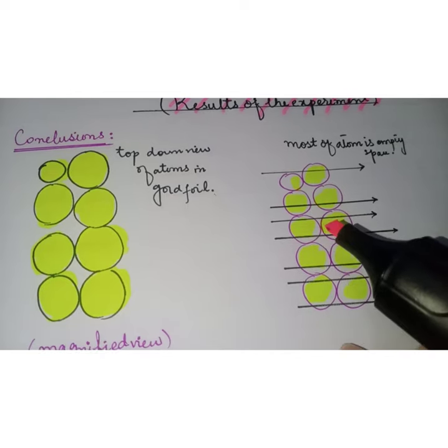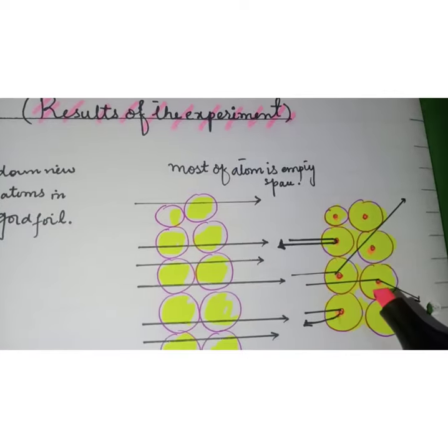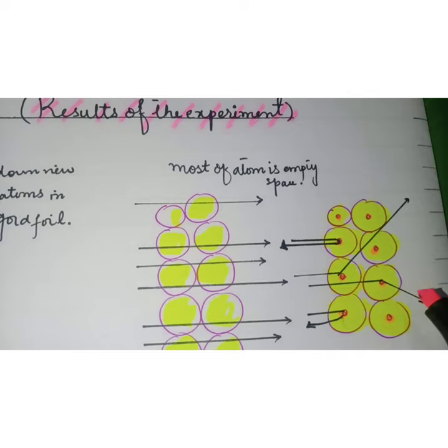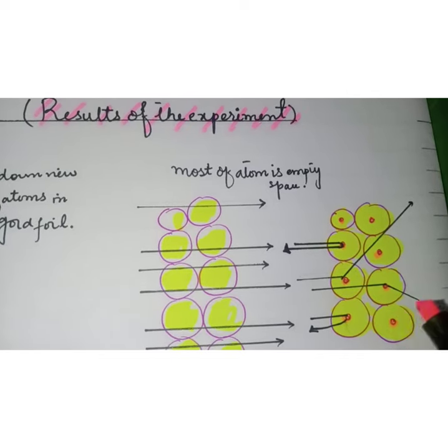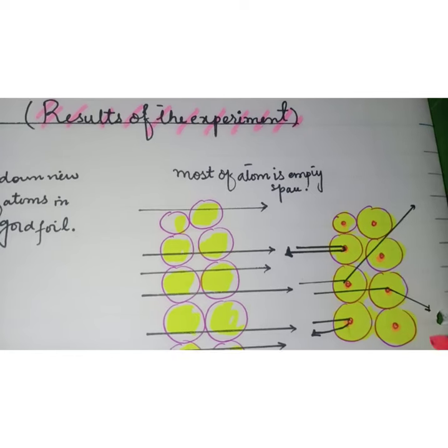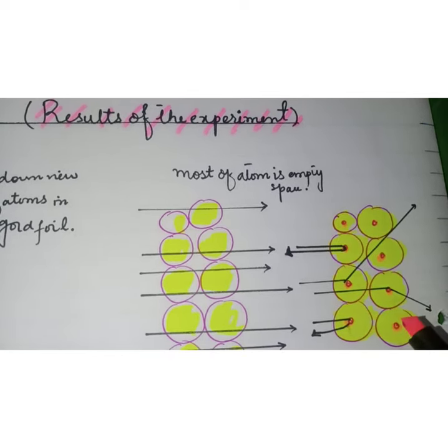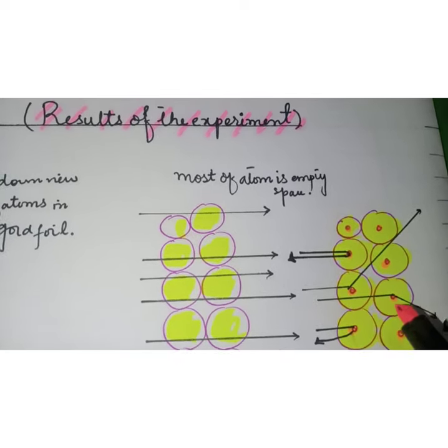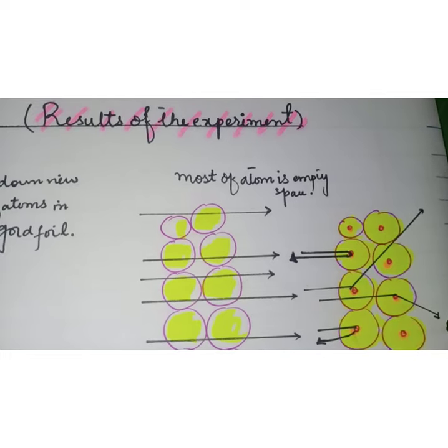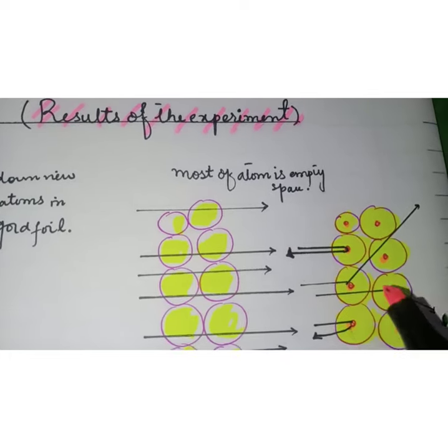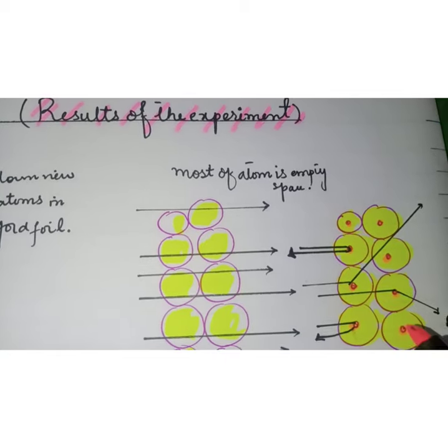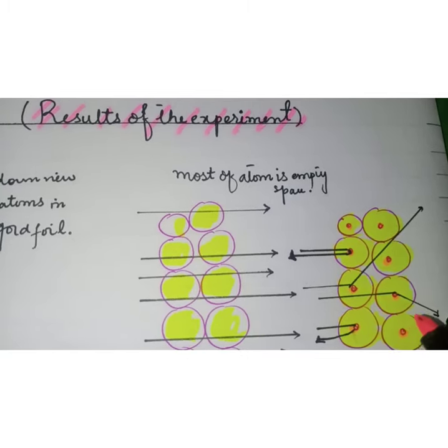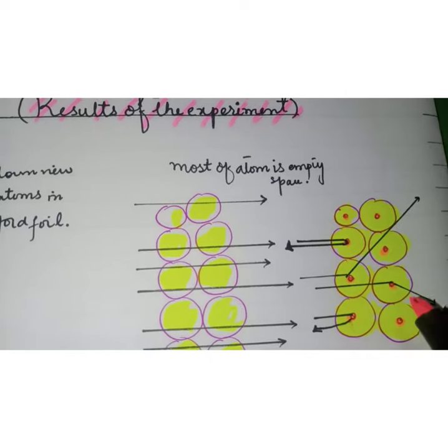Some alpha particles were deflected slightly, suggesting interactions with other positive charge particles within the atom. Some other alpha particles were scattered at large angles while a few even bounced back towards the source. Rutherford famously said it was almost as incredible as if you fired a 15-inch shell at a piece of tissue paper and it came back and hit you. Only a positive charge in a relatively heavy target particle such as the proposed nucleus could account for such strong repulsions.